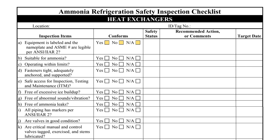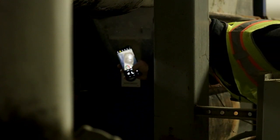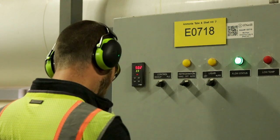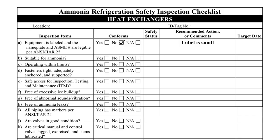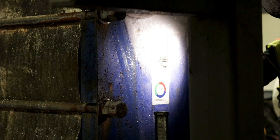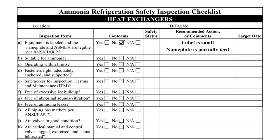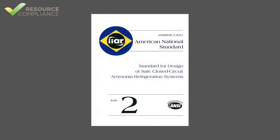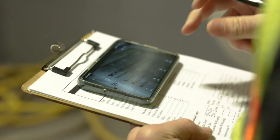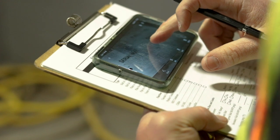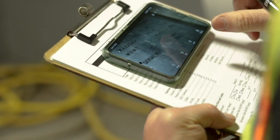Item A asks if the equipment is labeled and has a legible nameplate. A proper label consists of the component name and ID number. Since this shell and tube heat exchanger label ID number is so small, that should be marked as an item to be addressed. The plate and frame heat exchanger nameplate is partially iced — this is not a deficiency but should still be indicated as a comment on the checklist. IIAR Standard 2 contains the requirements for heat exchanger nameplates. If the heat exchanger is ASME stamped, the nameplate must comply with ASME requirements and contain all of the information required for pressure vessels.